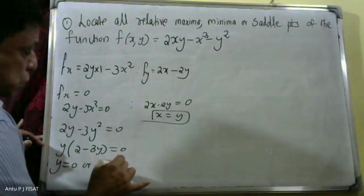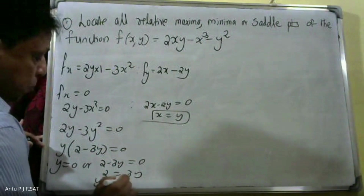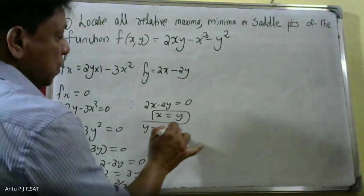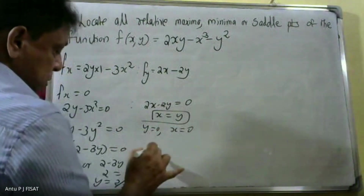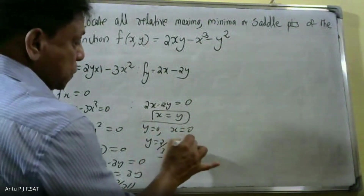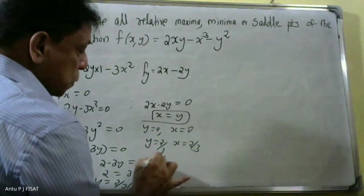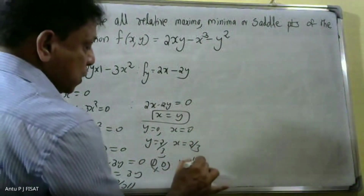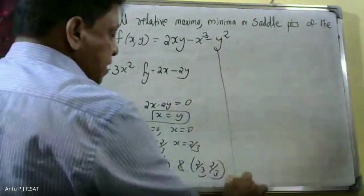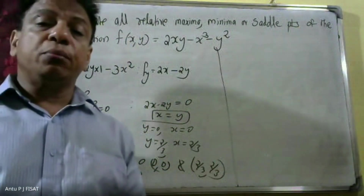From 2 minus 3y equals 0, we get y equals 2/3. Since x equals y: when y equals 0, x equals 0; when y equals 2/3, x equals 2/3. Therefore the critical points are (0, 0) and (2/3, 2/3).